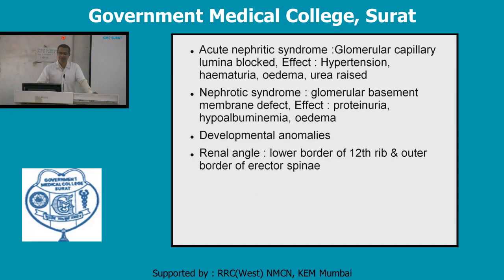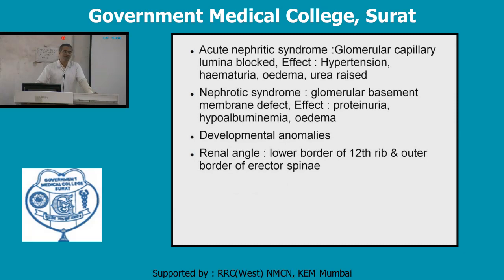In children, nephrotic syndrome may occur due to incompletely developed podocyte processes on the glomerular basement membrane. However, in children it is often self-limiting, with automatic repair of the glomerular basement membrane occurring over time. The features are the same — proteinuria, hypoalbuminemia, and edema — but recovery occurs naturally in most children.